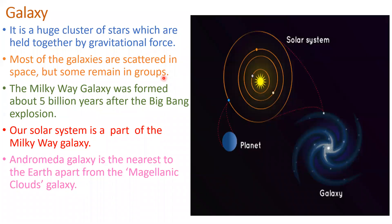What is a galaxy? A galaxy is a huge cluster of stars which are held together by gravitational force. Most of the galaxies are scattered in space but some remain in groups. The Milky Way galaxy was formed about 5 billion years after the Big Bang explosion, so it is only 10 billion years old. Our Earth and our solar system are part of the Milky Way galaxy. Andromeda galaxy is the nearest to the Earth, apart from the Magellanic Clouds galaxy.